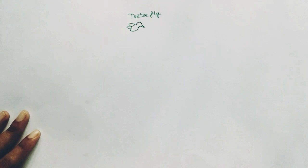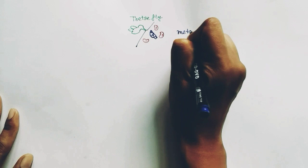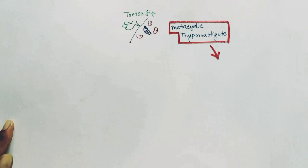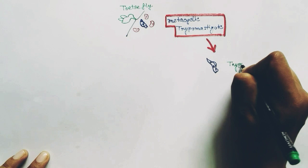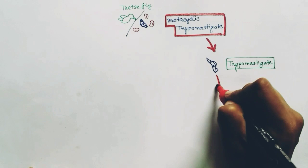So let's start with the life cycle of Trypanosoma brucei gambiense. This is the tsetse fly, which is the vector of the parasite. When the fly sucks the blood of a human, it transfers the metacyclic trypomastigote, which is the infective form. When it gets inside the blood, it travels throughout the blood, the lymph, and later into the spinal fluid.